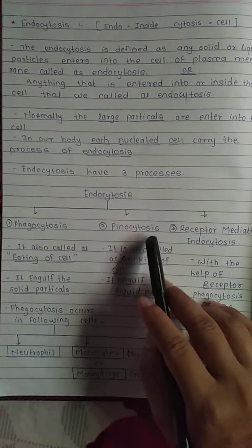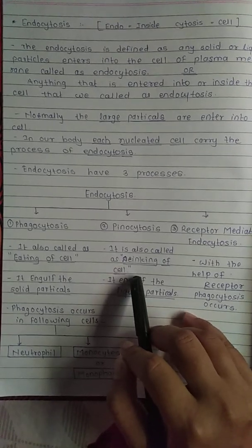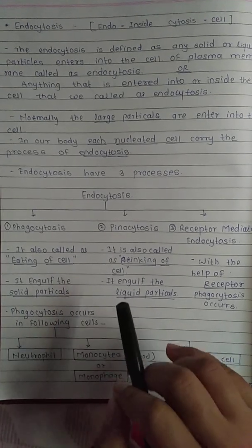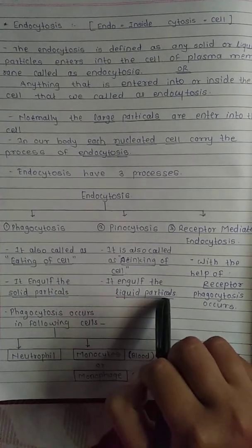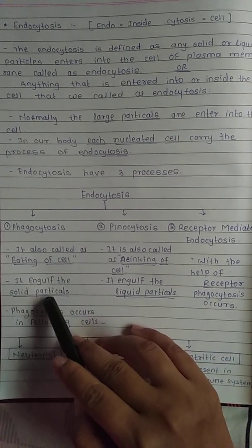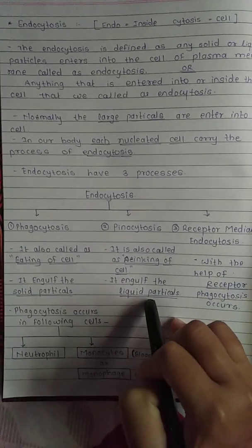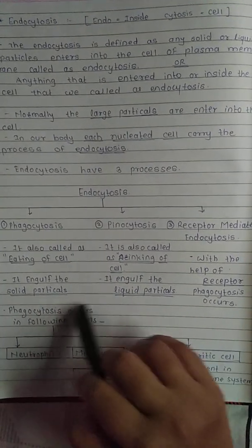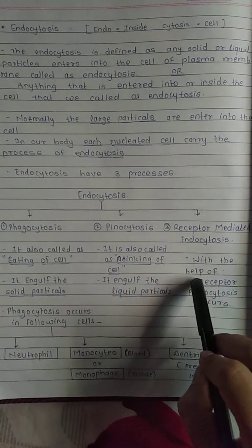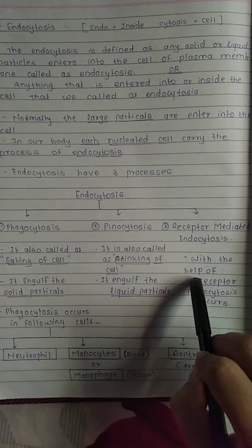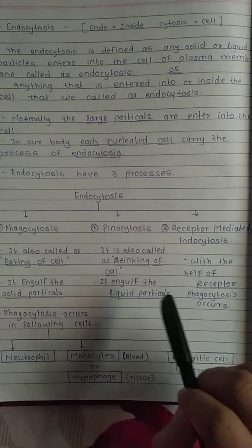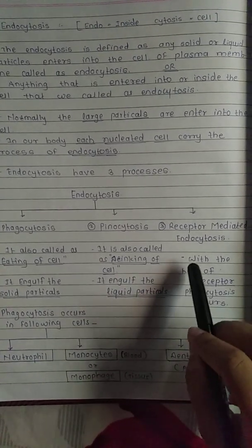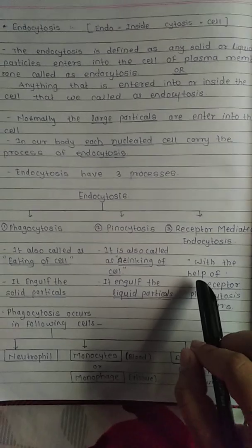Pinocytosis is also called the drinking of the cell — it engulfs liquid particles. Phagocytosis engulfs solid particles and pinocytosis engulfs liquid particles — this is the difference between these two processes. The third type is receptor-mediated endocytosis, where with the help of receptors, the process takes place within the plasma membrane.